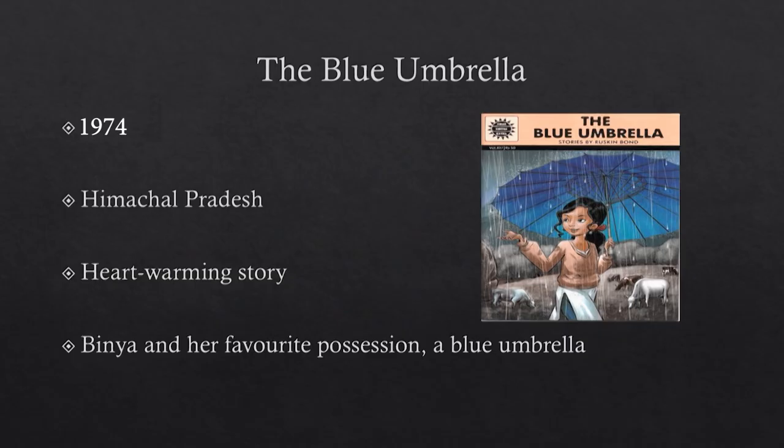The Blue Umbrella is set in Himachal Pradesh in the hills of that region in India. It is a heartwarming story about a little girl called Binya and her favourite possession, a blue umbrella. On first appearance it seems like a very simple tale, but there are layers to this particular short fiction which we will unravel in our analysis.